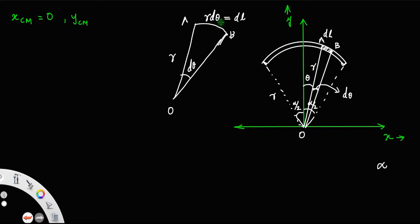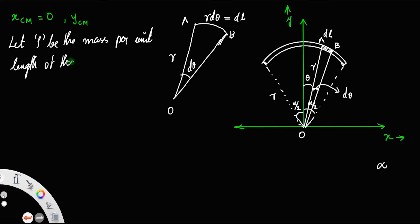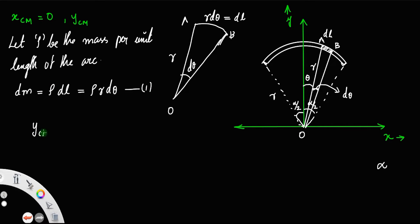Let rho (ρ) be the mass per unit length of the arc. Then the mass of the small portion dm is equal to density times length dL, that is ρ times dL, which equals ρR dθ. We have the equation for the center of mass: y_cm is equal to the integral of y dm divided by the integral of dm.